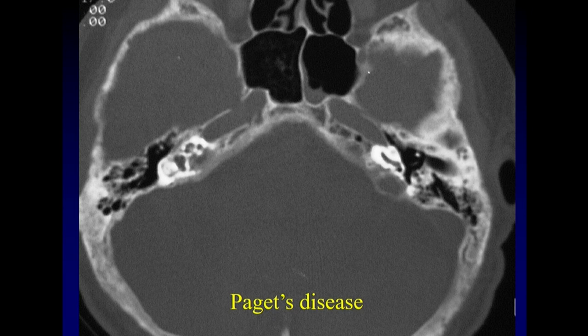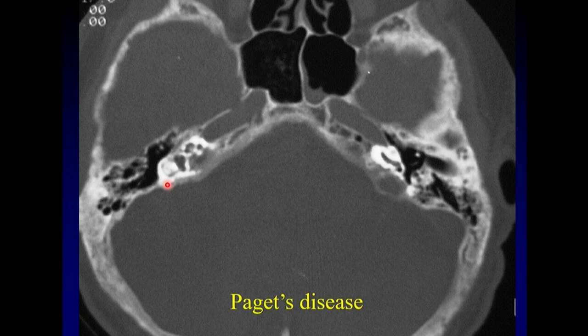There are a couple of things that can look a lot like otosclerosis and cause lucency in the inner ear that we don't want to mistake for otosclerosis. If you look carefully, that triangle of bone — the region of the fistula antifenestrum — is too lucent in this case, but so is everything else, and that is our clue that we're dealing with Paget's disease and not just otosclerosis.